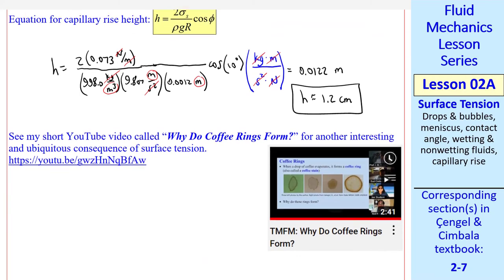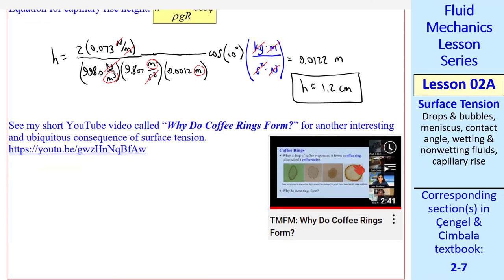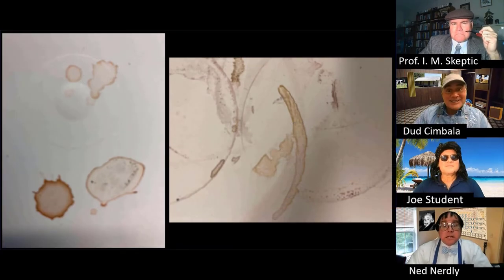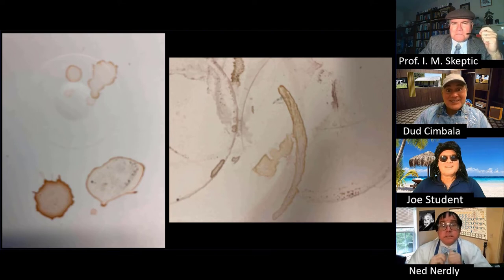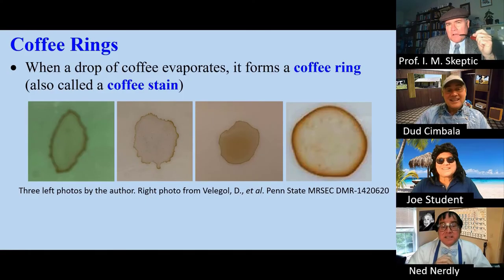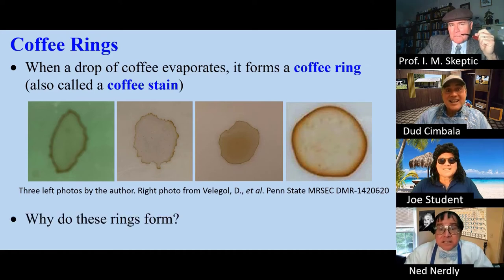Finally, I have another short video called Why Do Coffee Rings Form? You've probably seen these on your kitchen counter. This is a consequence of surface tension, and we explain how that works in this video. When I drink coffee, I always spill some, and when the drops dry, they leave these rings all over, like these pictures here I done took. Hey, dude, I've seen that too, man. What about you, Ned? Well, I don't drink coffee. It makes me too nervous. Professor Skeptic, what causes this? Those are called coffee rings. I'll share a presentation I recently gave. When a drop of coffee evaporates, it forms a coffee ring, also called a coffee stain. Here are some examples. Why do these rings form?